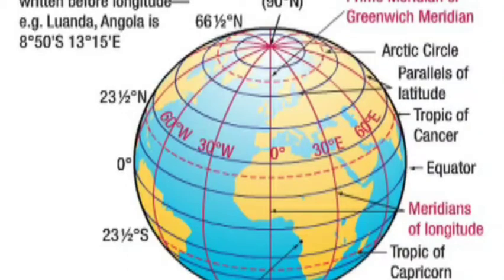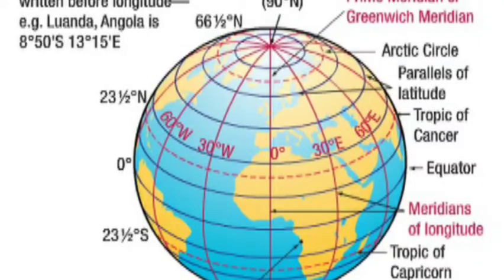Moving further, the latitude at 66 and a half degrees North, parallel to the equator and near to the North Pole, is called the Arctic Circle.